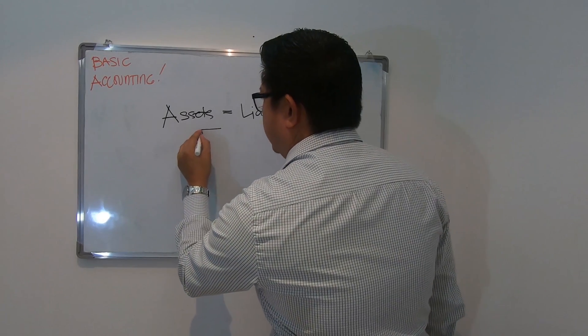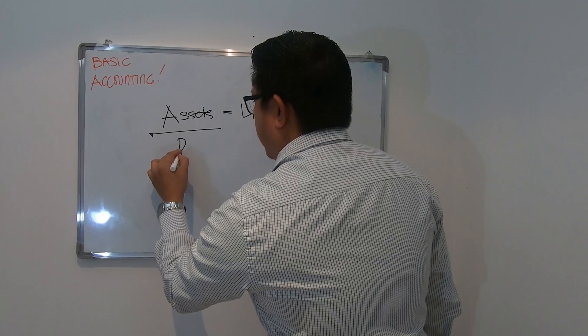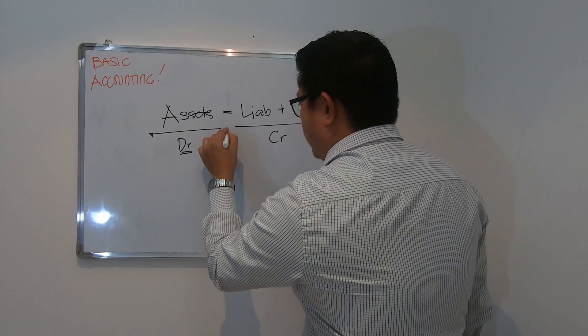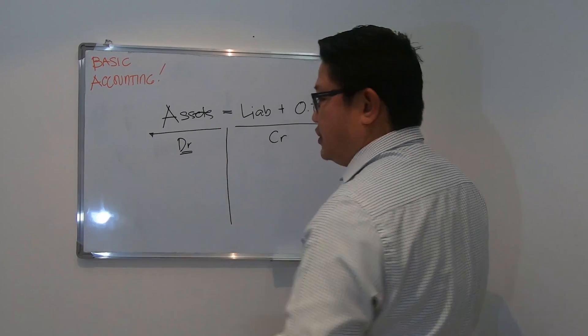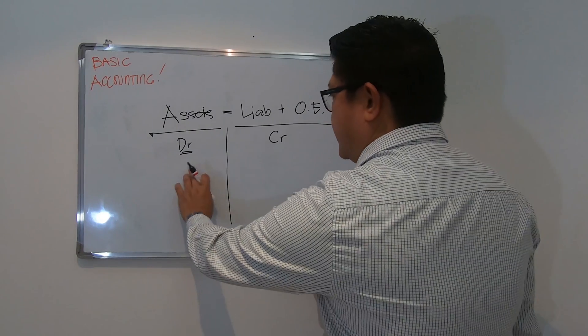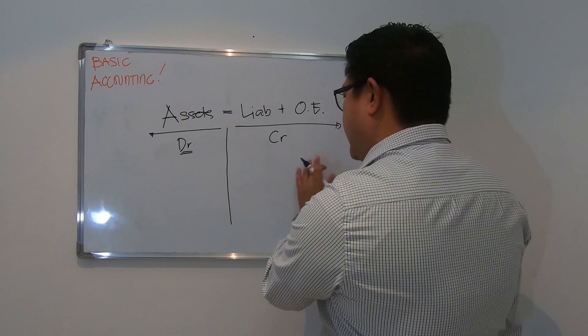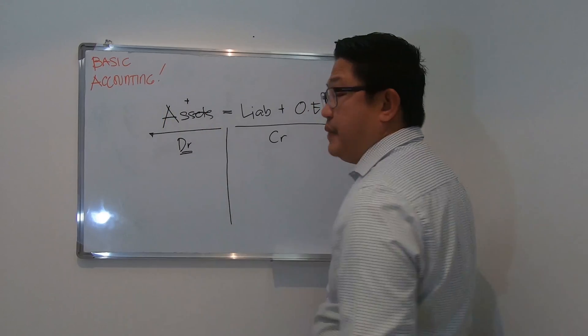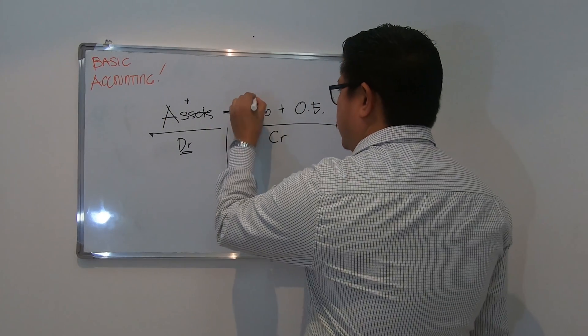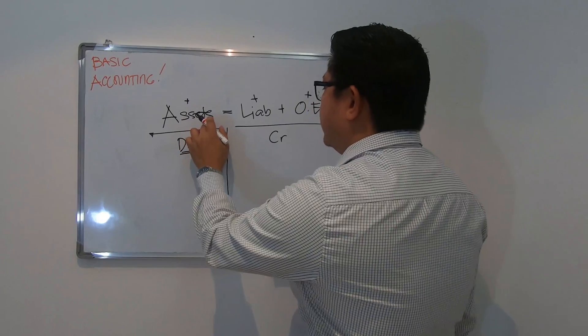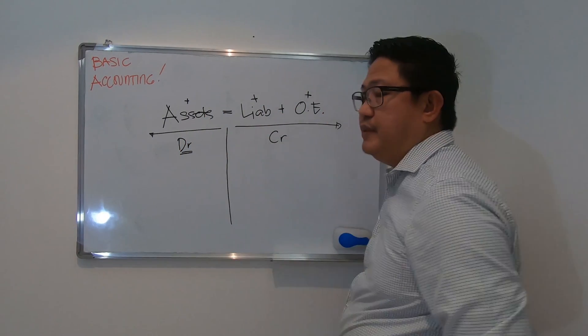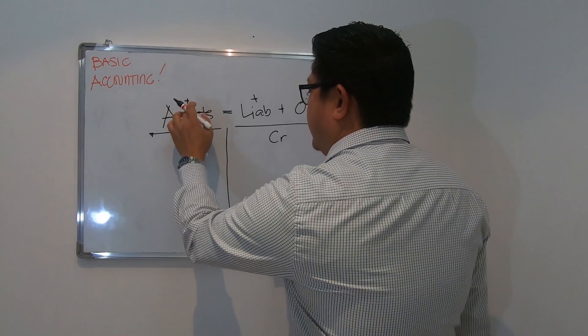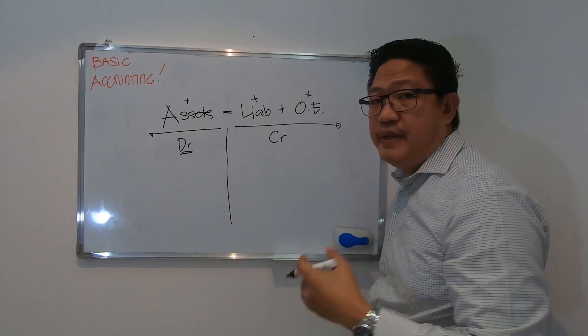In accounting, this side should be the debit side and this side should be the credit side. So we put a border here. Anything from here, the normal balance is debit, and anything on this side should be credit. But if it is normal balance, balance should always be positive and same with this one. Meaning if you record assets on the other side, the balance or the entry should be negative. But at the end of the day, the assets should be on the debit side and always be on the positive side.